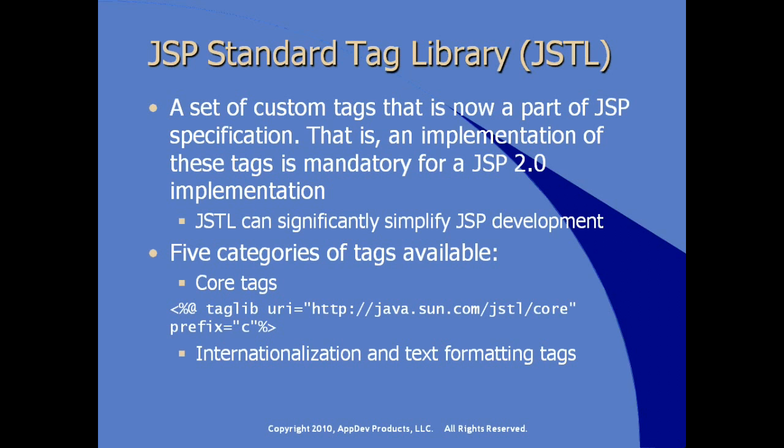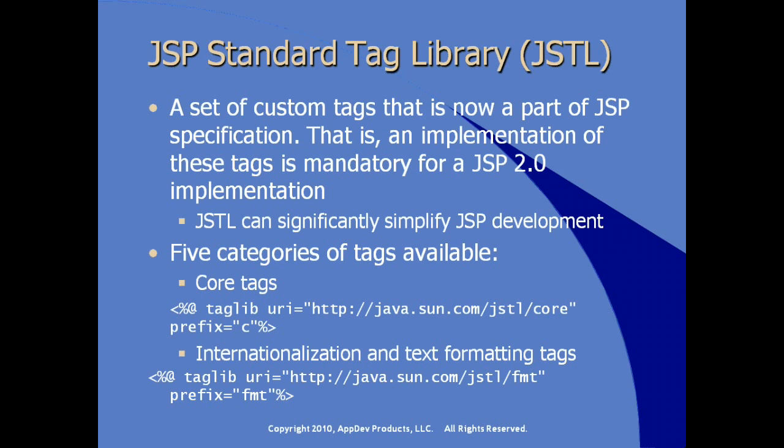There's another set of tags specifically optimized for internationalization as well as some basic formatting. An example of the taglib directive uses the URI pointing to JSTL/fmt, and by tradition and convention you'll quite often see this referred to with the prefix FMT, although that's not a requirement — it is quite common to distinguish these tags.